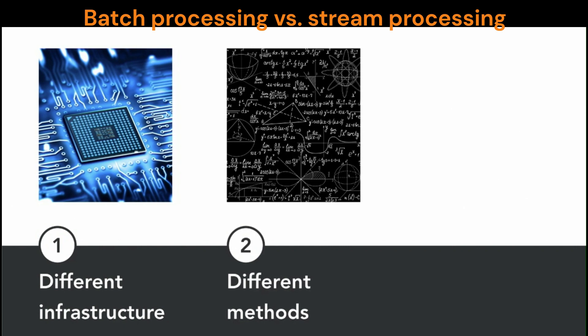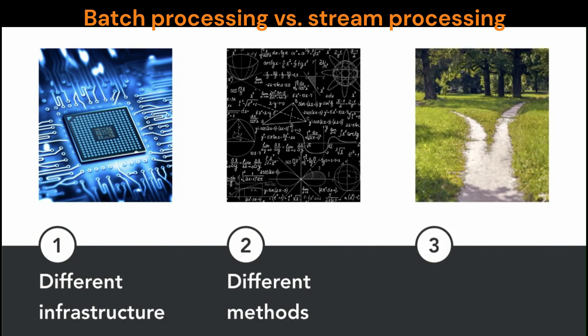Stream processing often uses different methods. You can't do an elaborate neural network on streaming data — you often have to simplify the model depending on the kind of data and the volume coming in. And most significantly, stream processing has different goals than batch processing. Stream processing is designed to look for very quick trends or immediate anomalies — something that requires immediate action, something where the business simply can't survive without that moment-to-moment responsiveness.